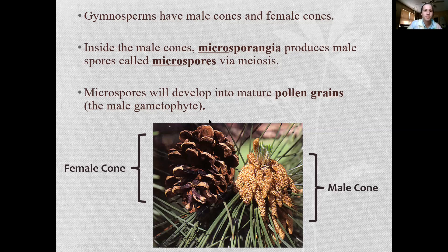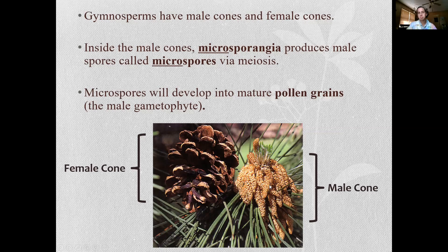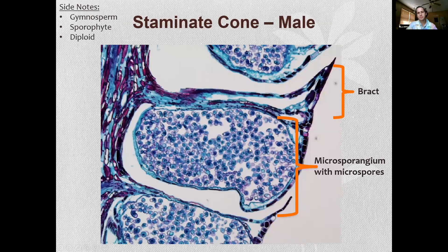So gymnosperms have male cones and female cones. Microsporangia produce male spores that turn into pollen grains. So let's look at one of these staminate cones.